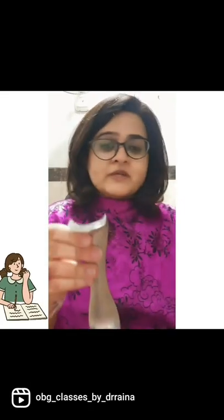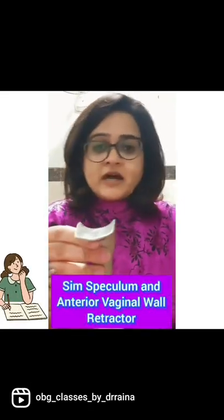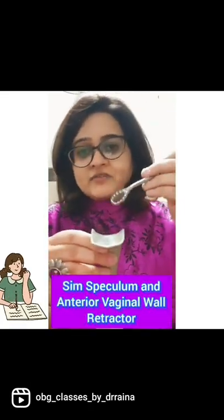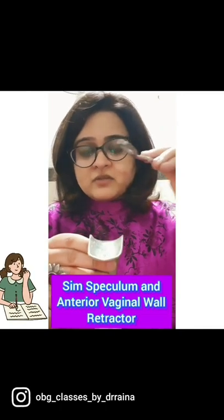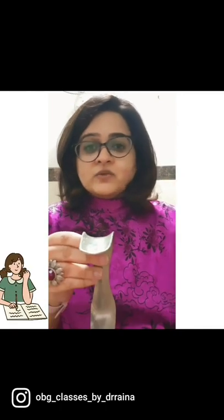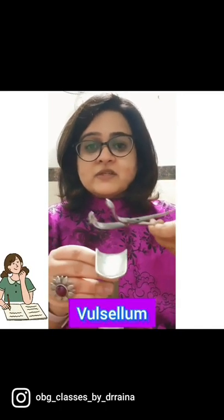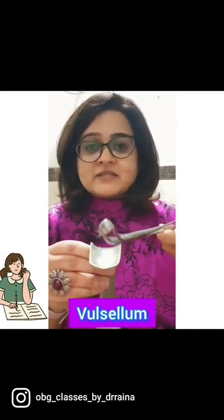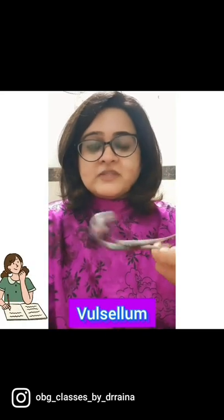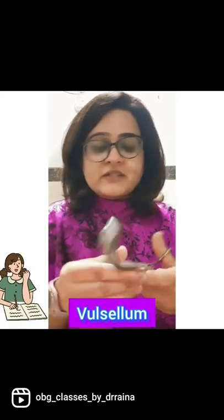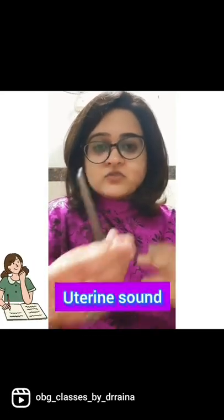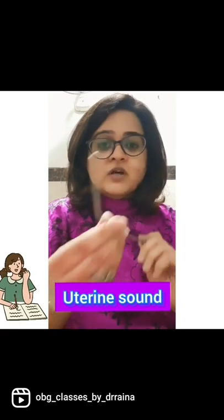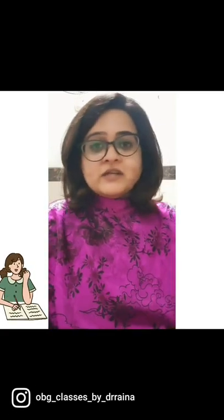Then we introduce a Sims speculum and with an anterior vaginal wall retractor, we lift the anterior vaginal wall, visualize the cervix, and hold the cervix with a valsellum. We hold the anterior lip with a valsellum and then introduce the uterine sound — this is the uterine sound — to measure the utero-cervical length.